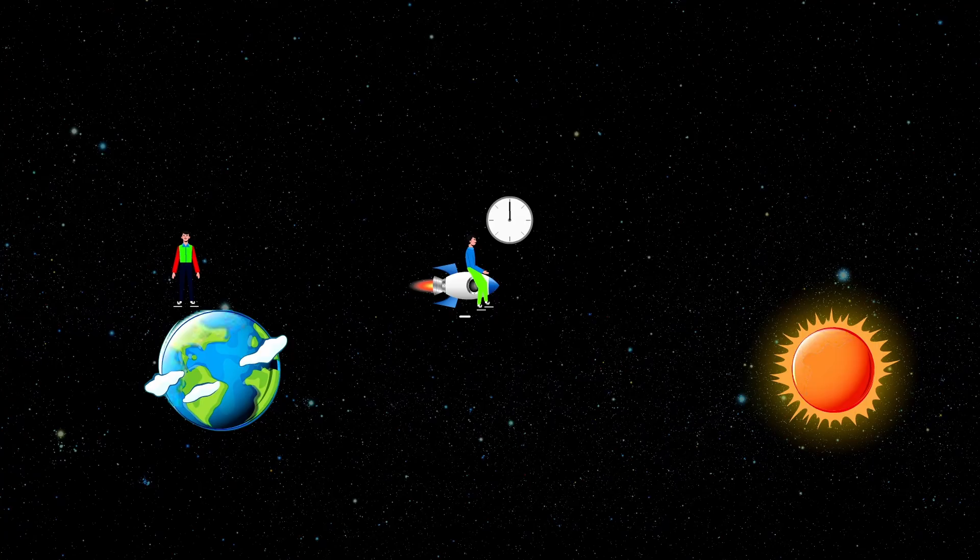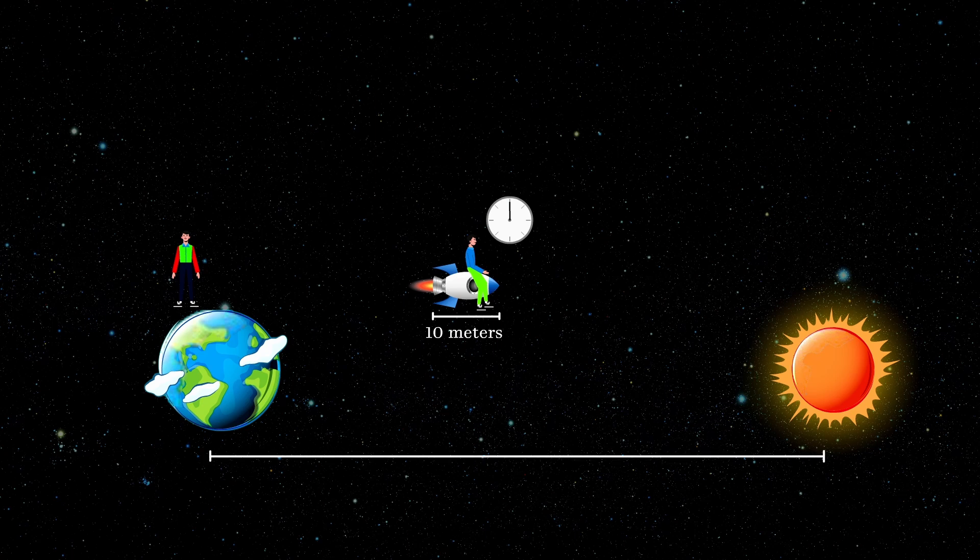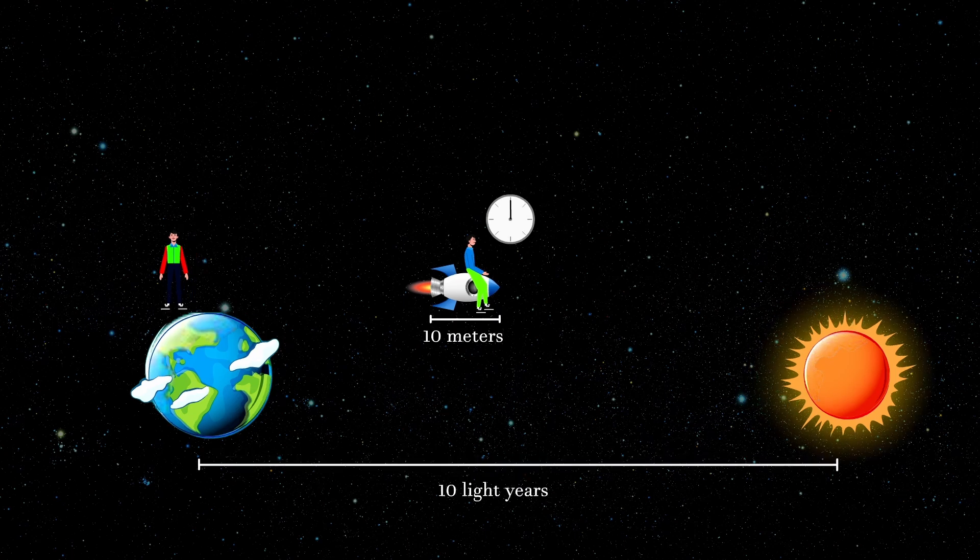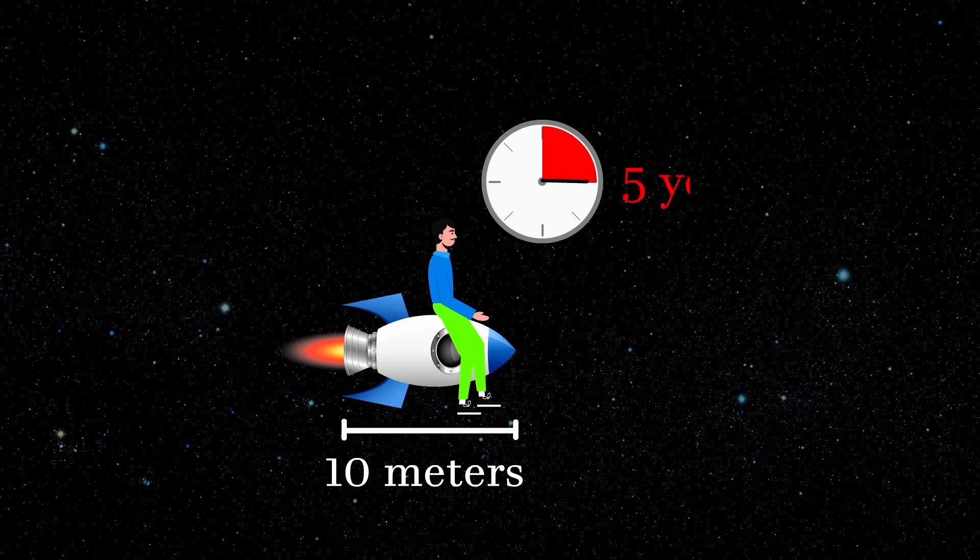In special relativity, time and space is relative and therefore, whenever you hear someone saying that that ship is 10 meters long, this distance is 10 light years or there is 5 years on a certain clock,